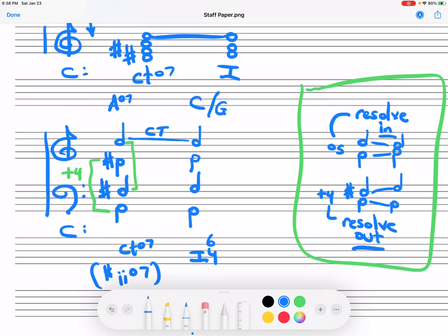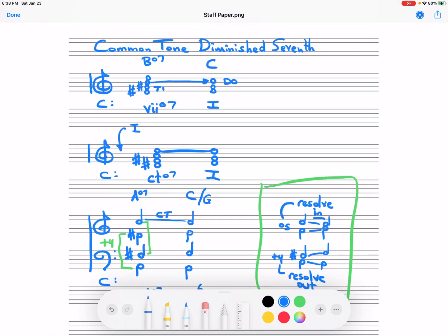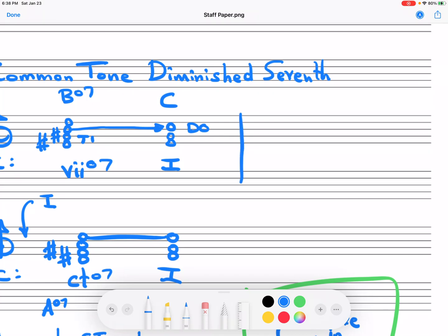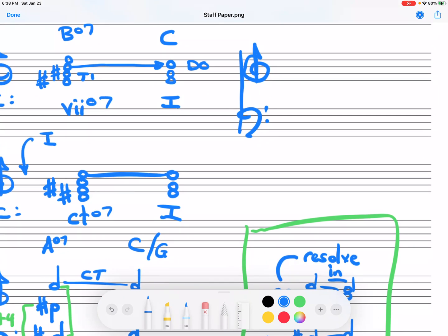Sounds like this. And, then obviously you have to resolve this perhaps. So, depending on how you spell it, it will affect the inversion of the next chord. We're going to do one more. And, that is a common tone diminished seventh to five.